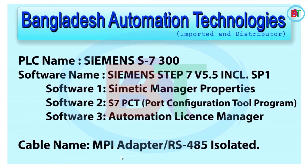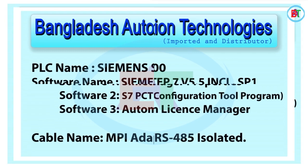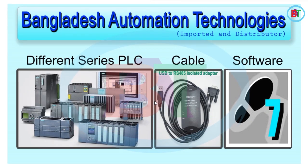This is how we communicate from PC to PLC, which uses an MPI adapter or RS-485 isolated connection. On the other hand, we have the S7-300 software, which requires a communication cable.